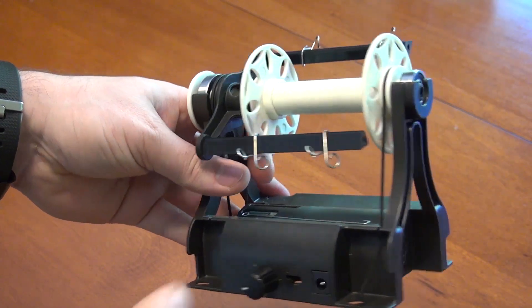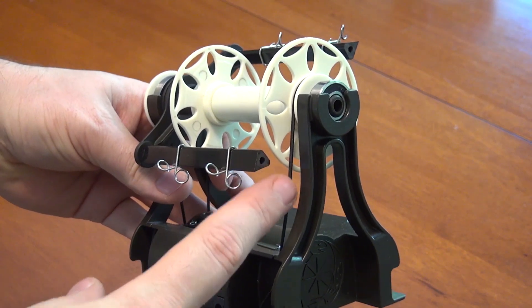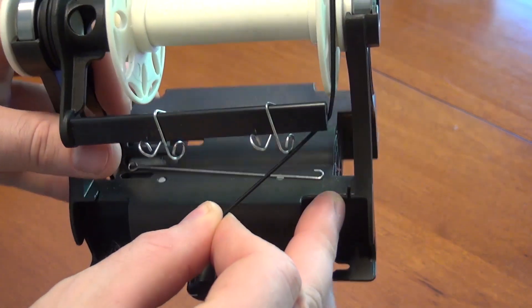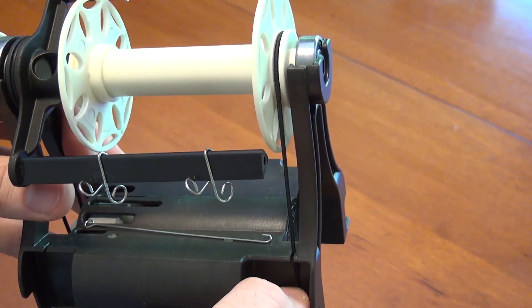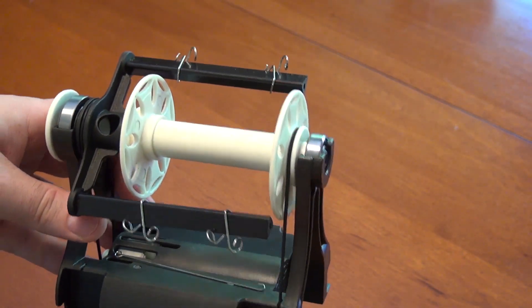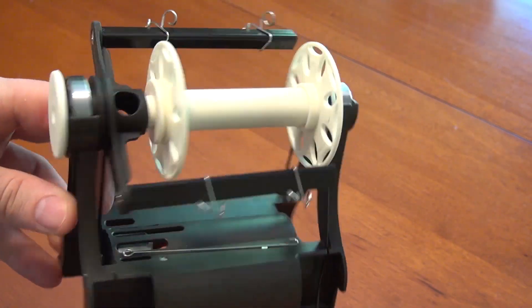This black elastic string is called the tension band. It runs through these little slots like this. The tighter you pull it the more uptake your yarn will have. Uptake is the amount of pull your yarn has on your hands when spinning. We suggest you start with a light tension and uptake.